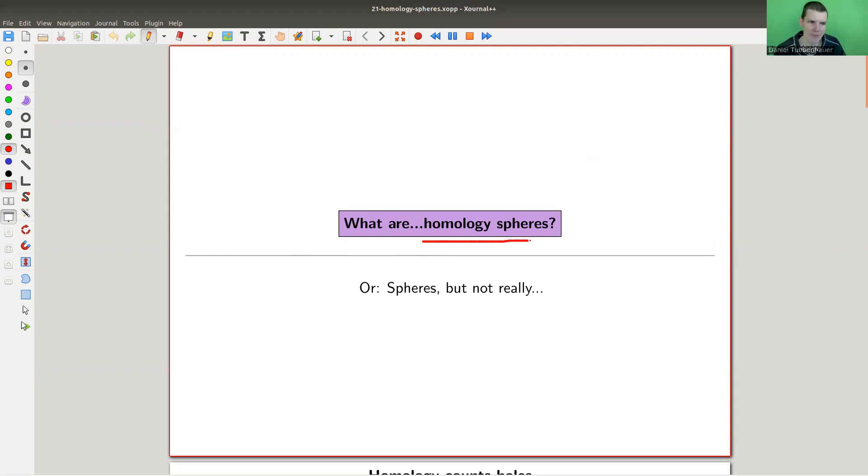Homology spheres are kind of weird objects. They want to be spheres, but not really. So they're always fun, and they're always kind of counterexamples for everything you've ever seen. Well, they're good counterexamples for a lot of things in low dimensional topology.